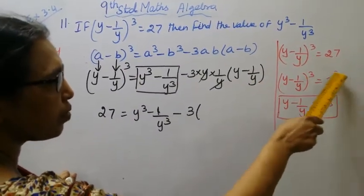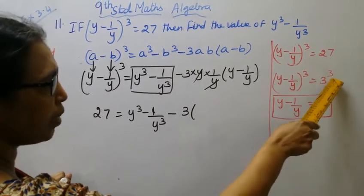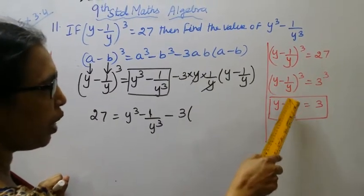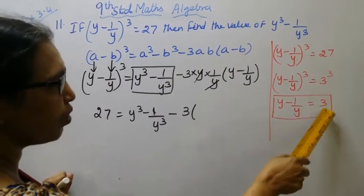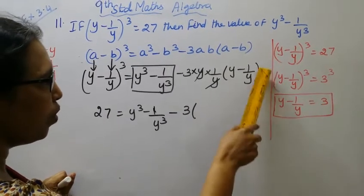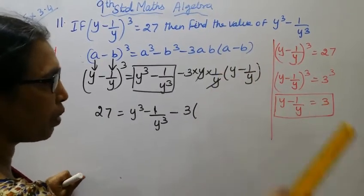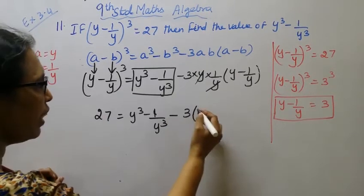Here y minus 1 by y, we found 3, right? 27's cube root is 3. Power is the same on both sides. So y minus 1 by y equals 3. We multiply by 3.